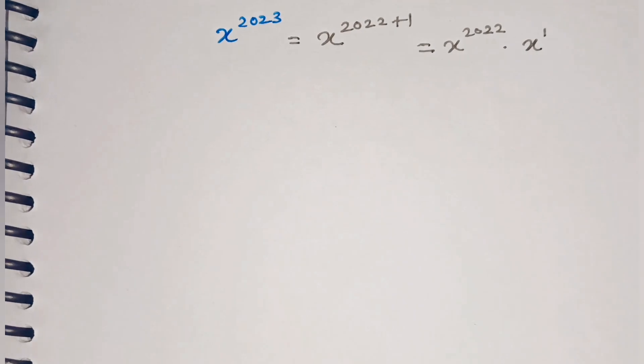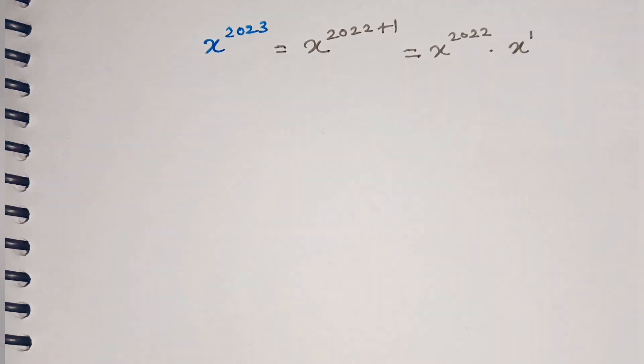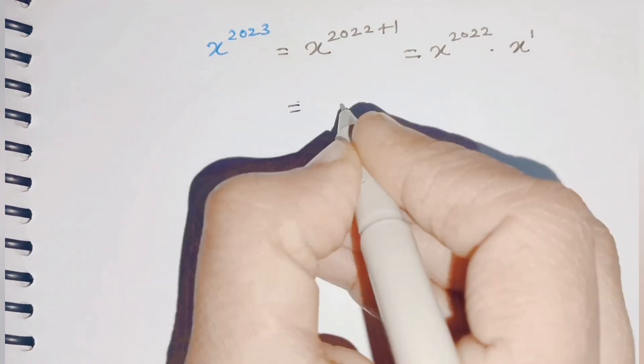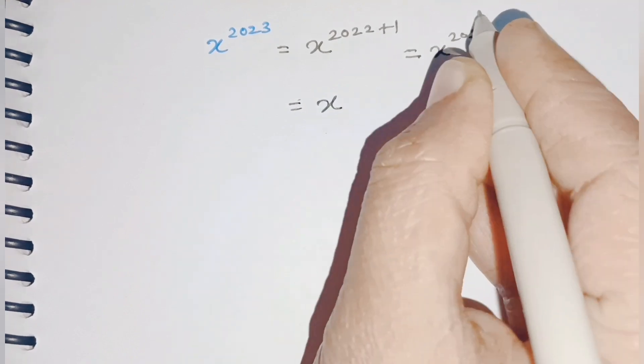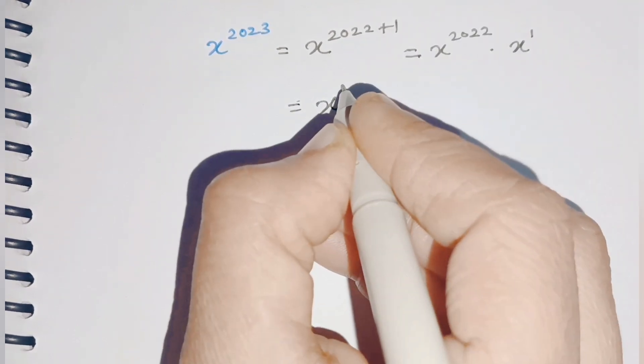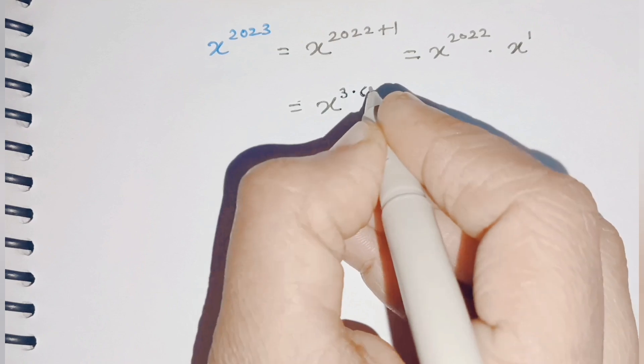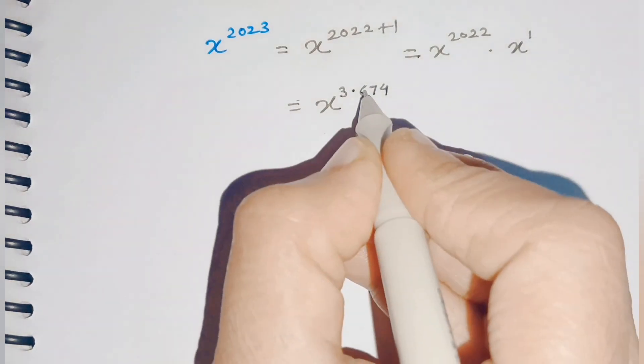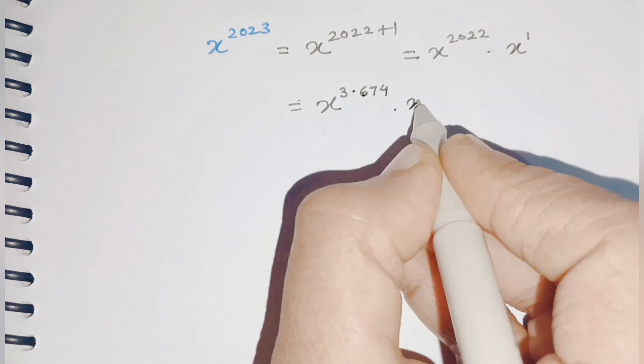As we have the value of x³, I can write 2022 as a multiple of 3. So it is 3 × 674. Therefore our right-hand side will become x^(3×674) · x^1.